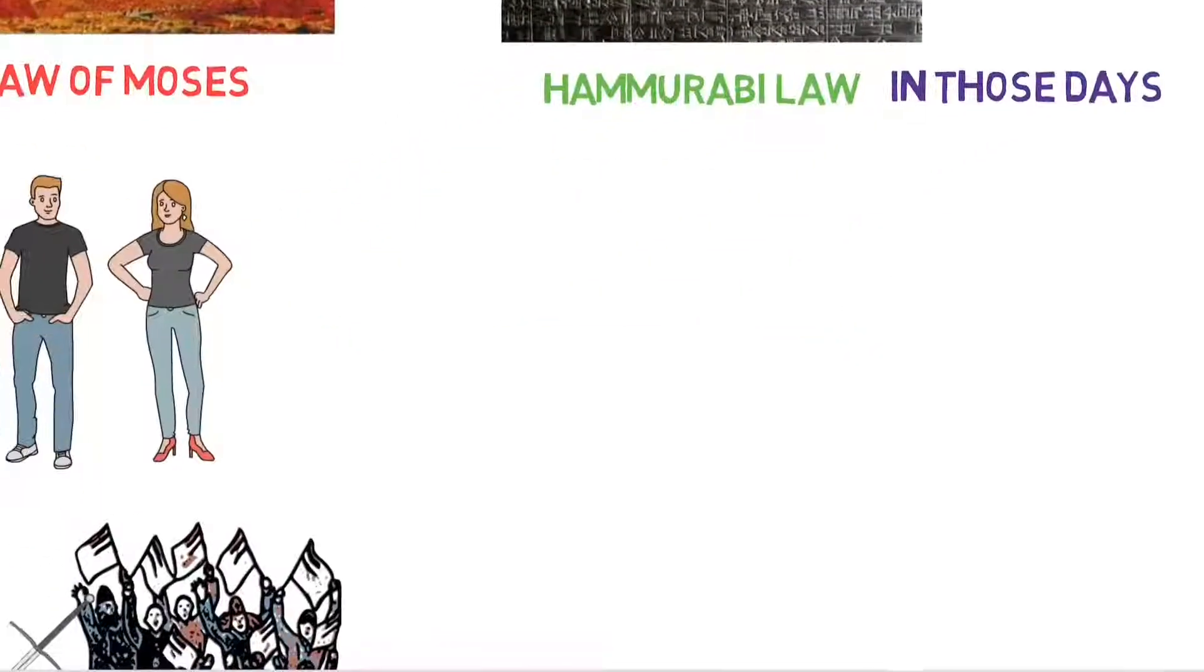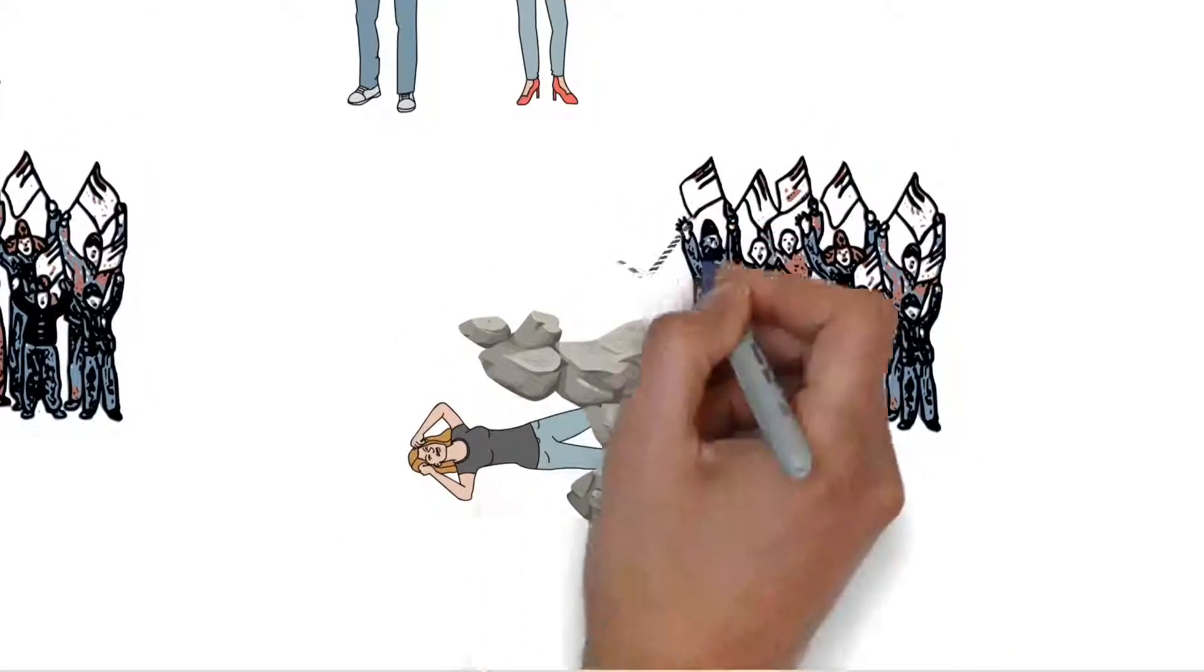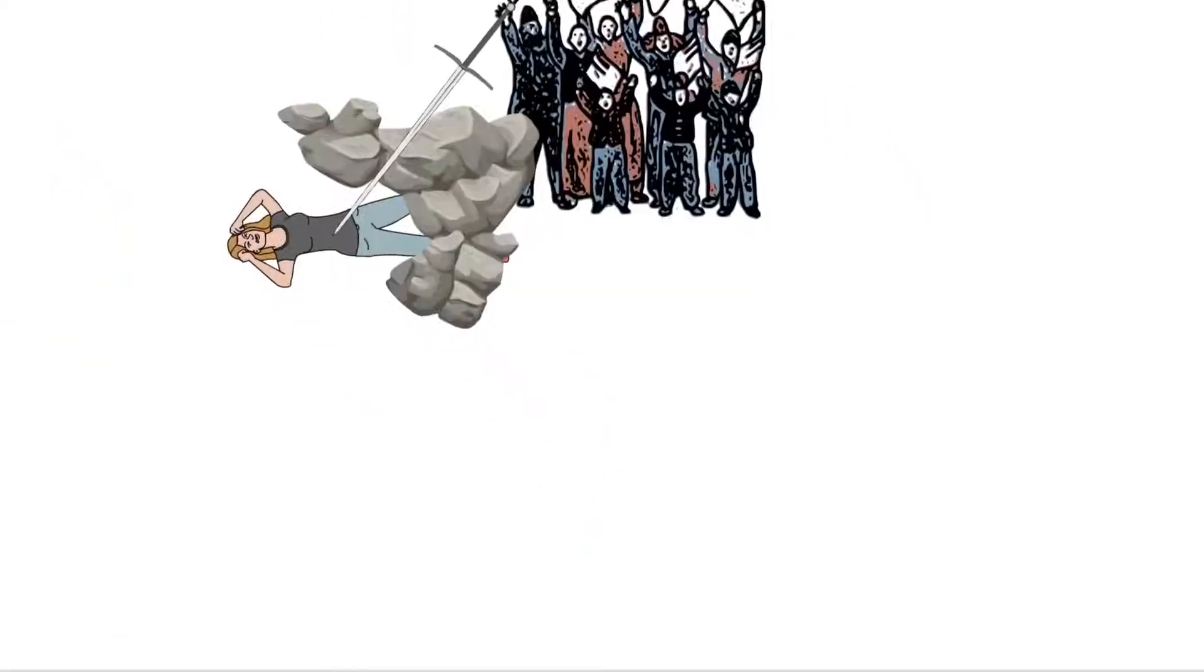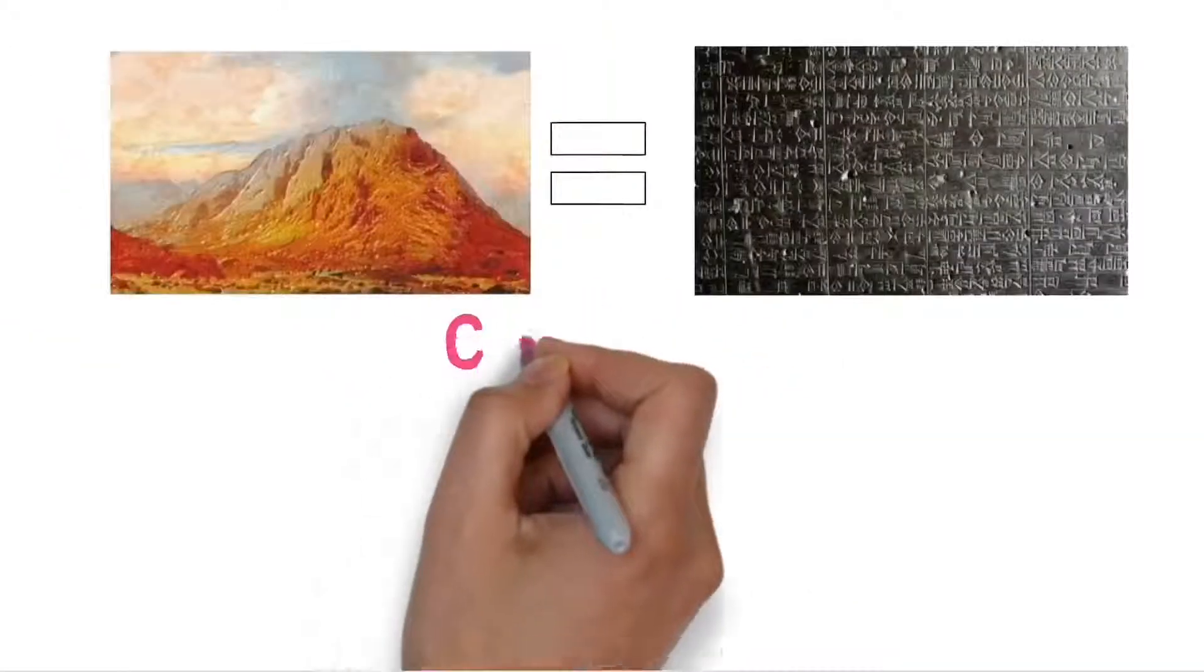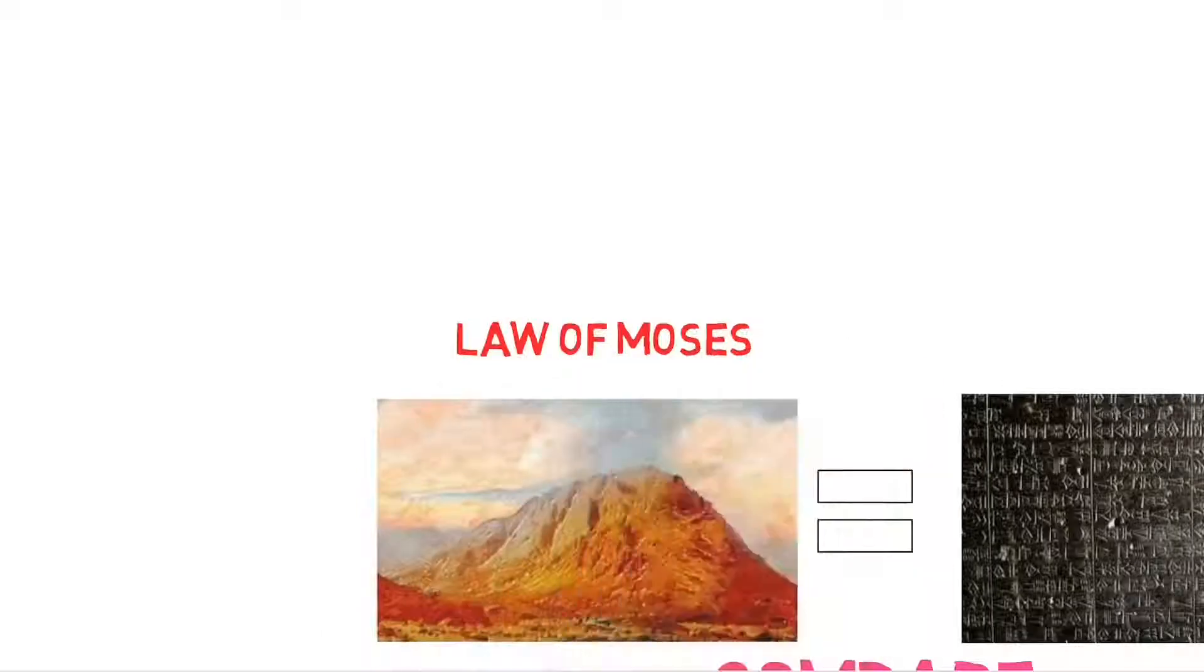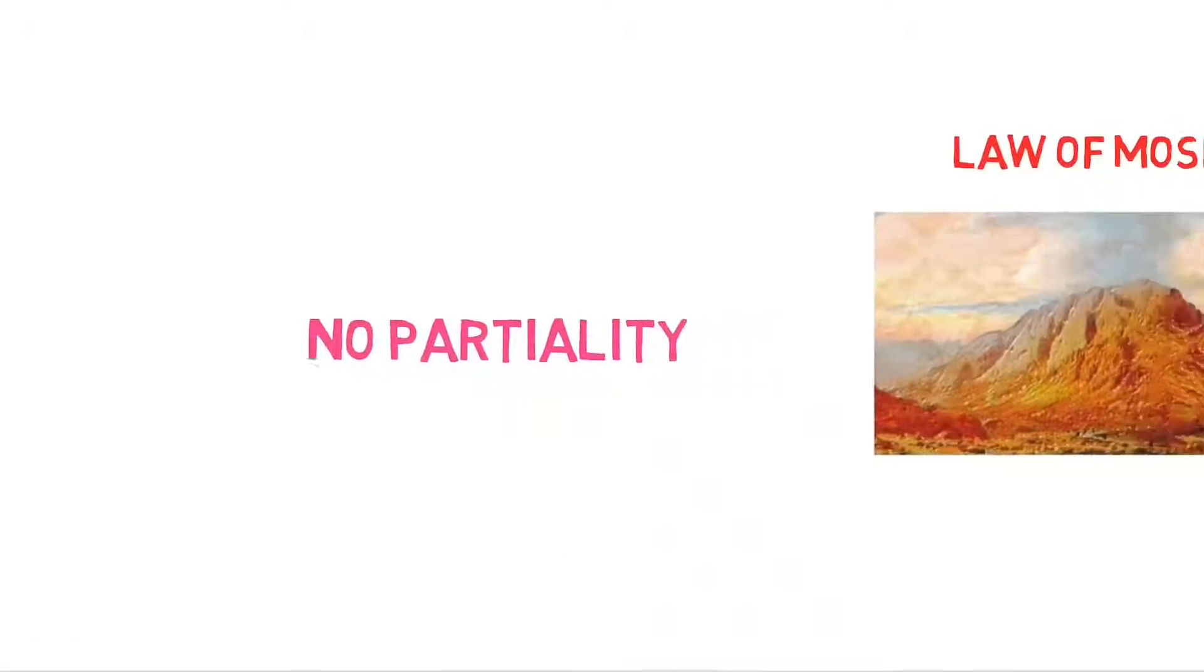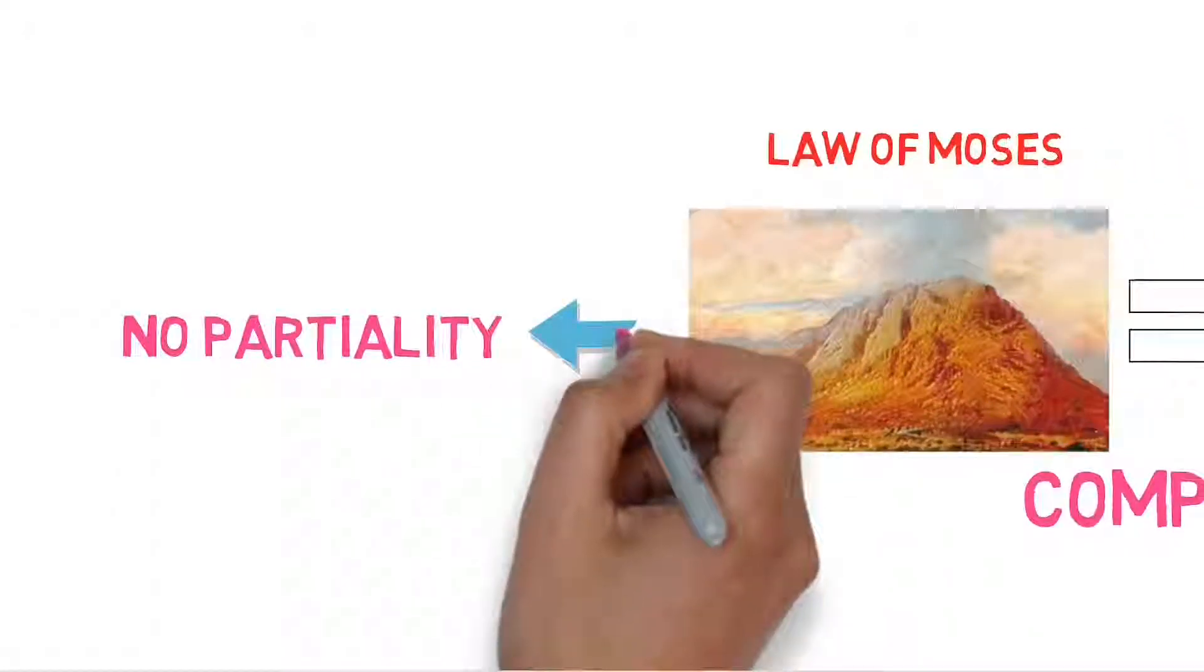But, in Hammurabi law or in those days, if a man or a woman is caught in adultery, then only the woman should be put to death, not men. Now, if we compare the law of Moses and Hammurabi law, we will find that the law of Moses does not make any partiality.